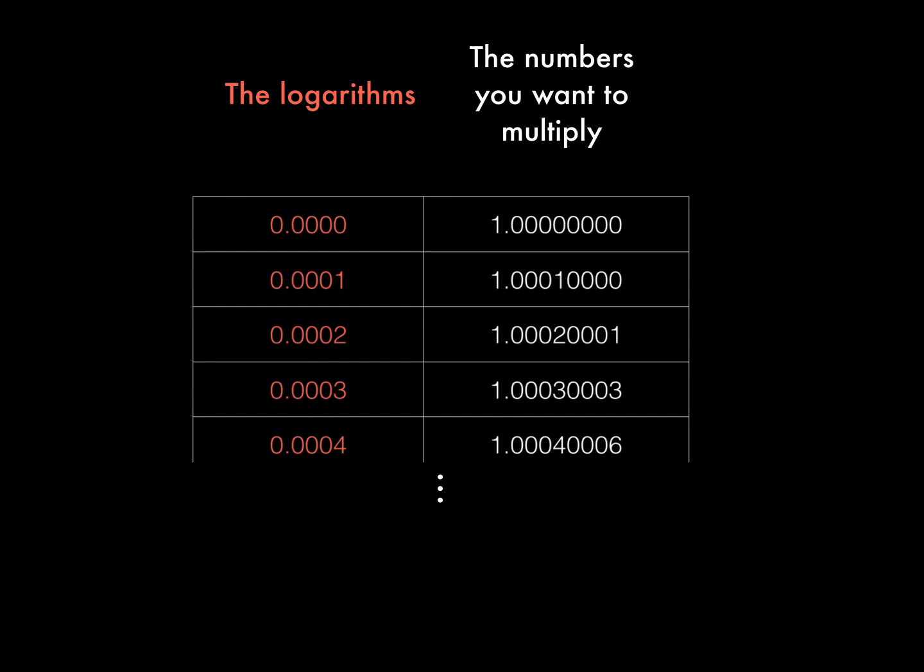This may seem kind of random, but it's actually a natural thing to do, because then, right at the start, the numbers on the right and the logarithms on the left are changing at the same speed. In the very first step, both of them go up by .0001.